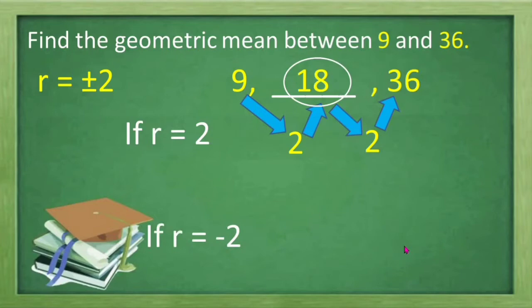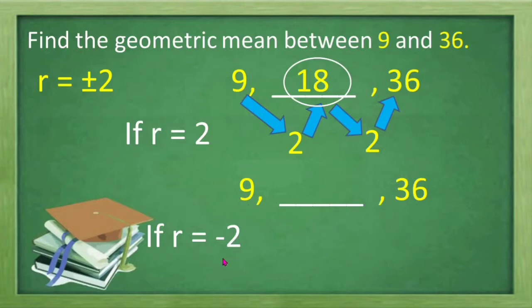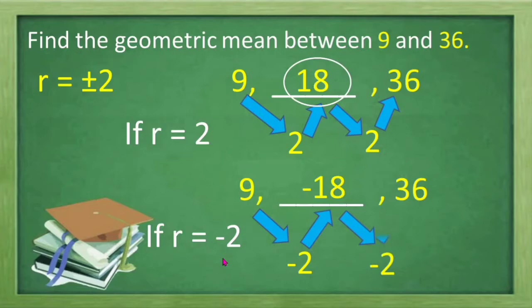How about if r is equal to negative 2? Again, we have our sequence 9, blank, 36. We look for the second term by multiplying the first term 9 by our common ratio negative 2. So 9 times negative 2 equals negative 18. Let's check: is negative 18 multiplied by negative 2 equal to 36? Yes. Therefore, negative 18 is the negative geometric mean between 9 and 36.